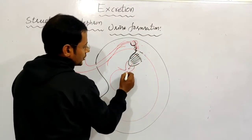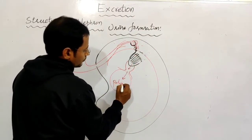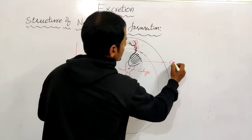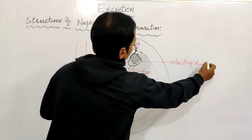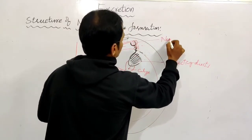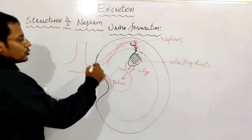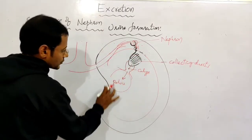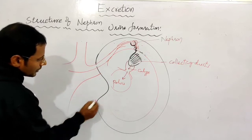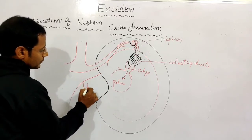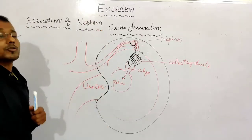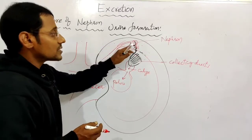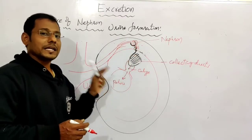The calyx connects to the pelvis. Urine flows from the collecting ducts into the calyx, from the calyx into the pelvis, and from the pelvis into the ureter - a tube-like structure. The ureter carries urine into the urinary bladder, where it is temporarily stored.